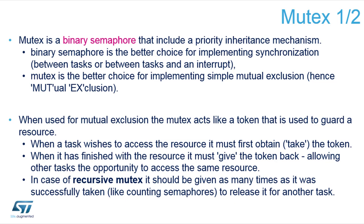So what is a mutex? A mutex is a token. Have you ever run a relay race where different people pass the token? If you don't have the token you don't run; if you have the token you can run. The mutex object is effectively a token. It is opposite to the binary semaphore because when you define it, it is already present — it always has a value of one — and it works to guard some shared resource.